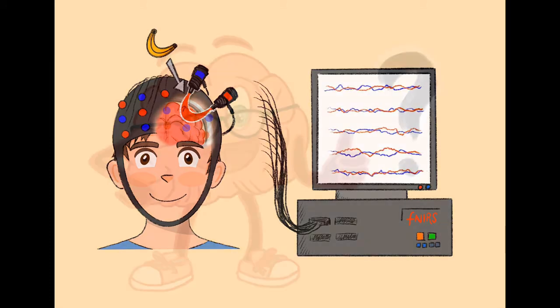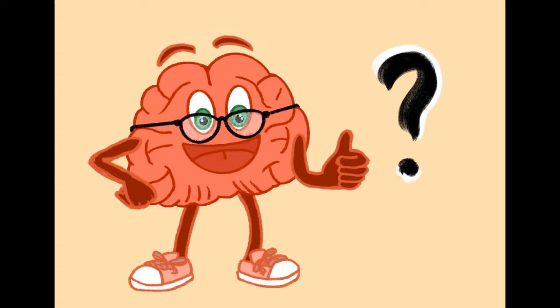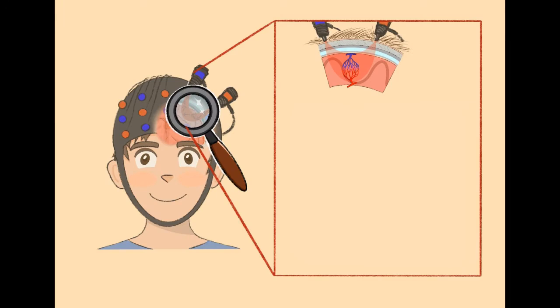But how can we use light to measure your brain's activity? To understand this, I will explain what happens in your brain when it is active. Just like yourself, your brain needs food and oxygen. When brain areas become active, they need even more fuel.